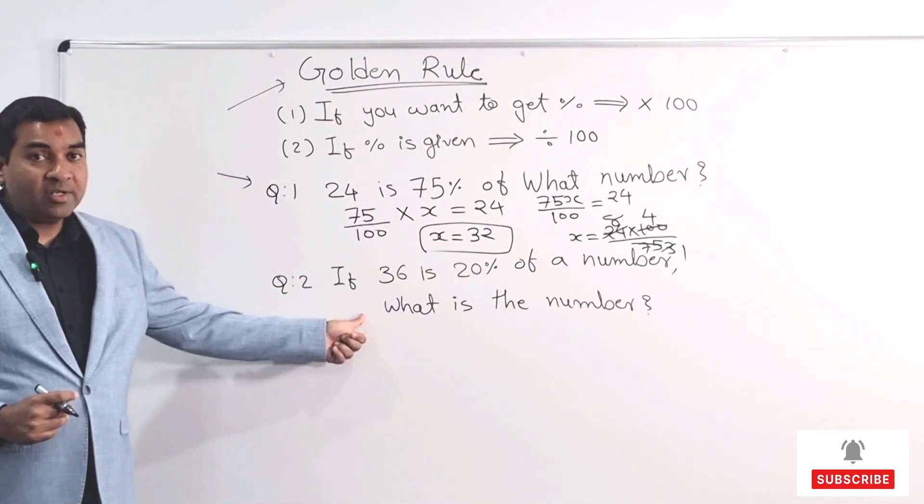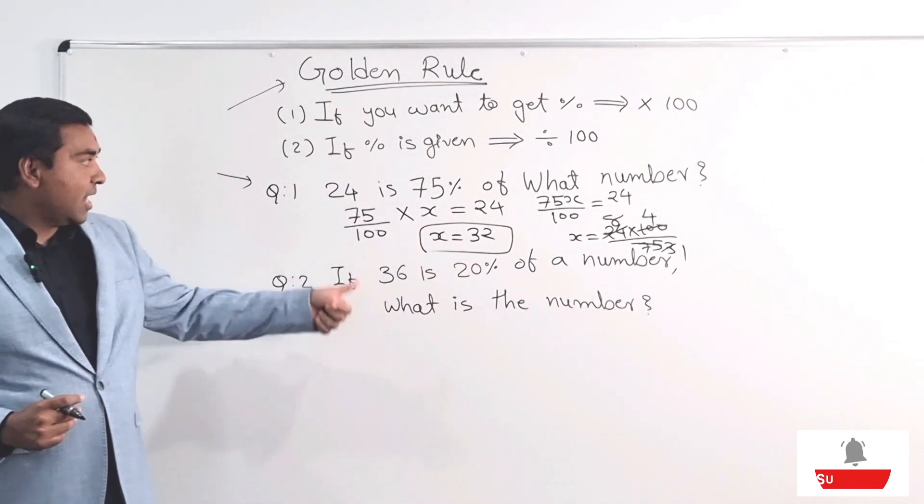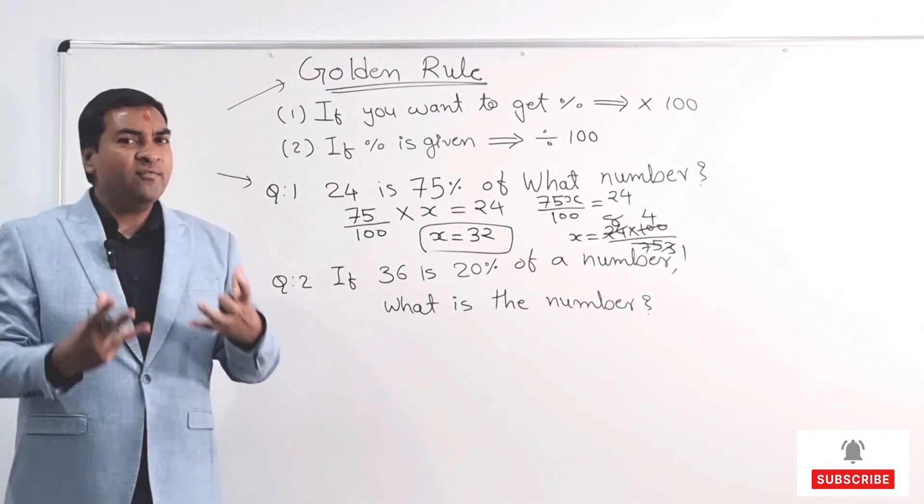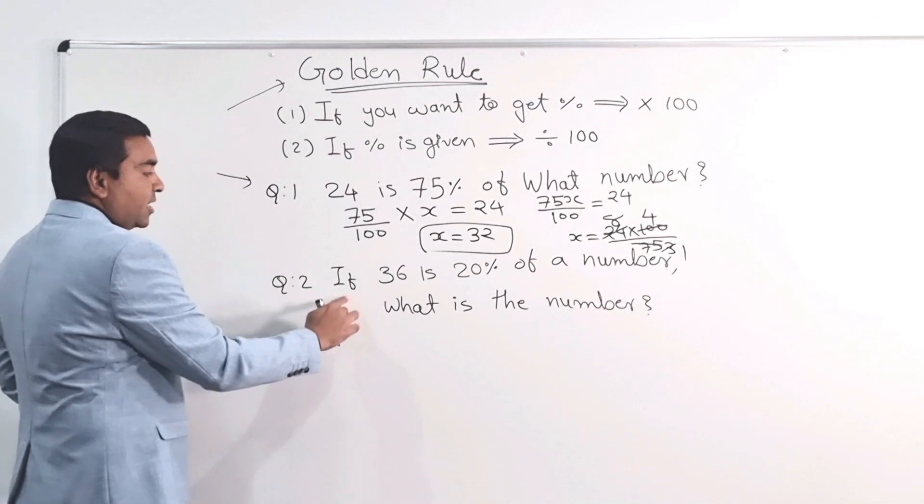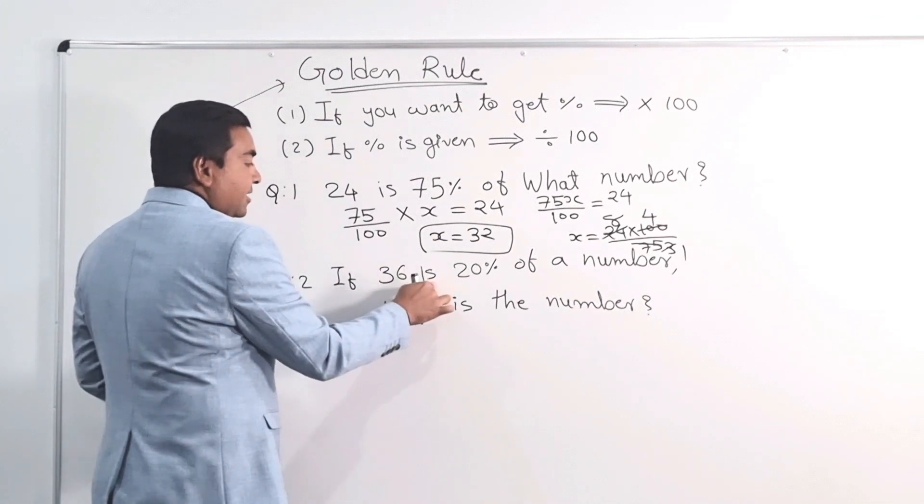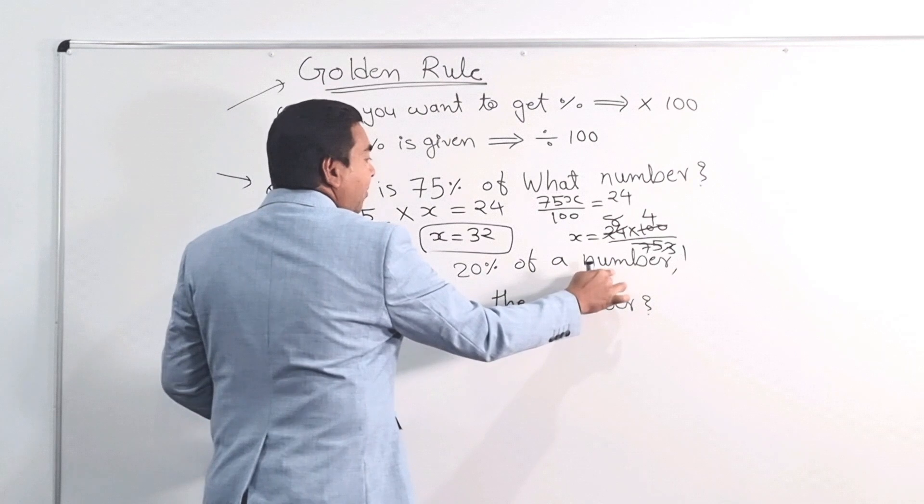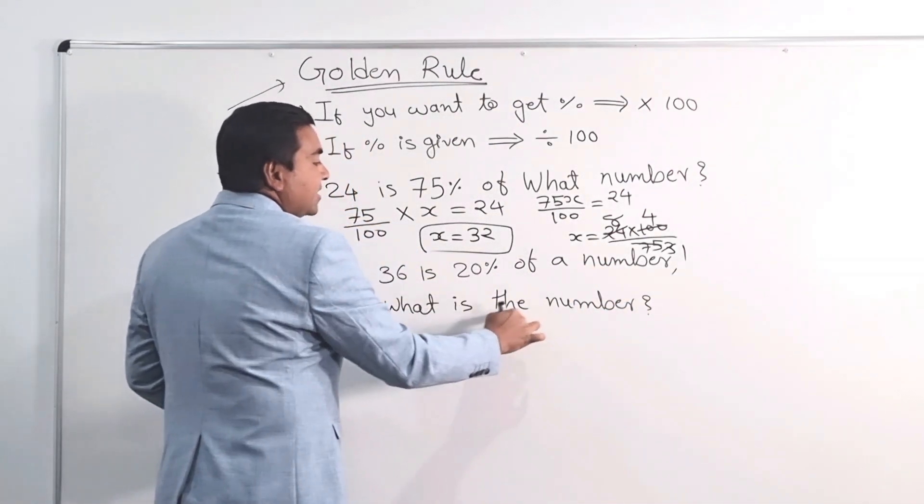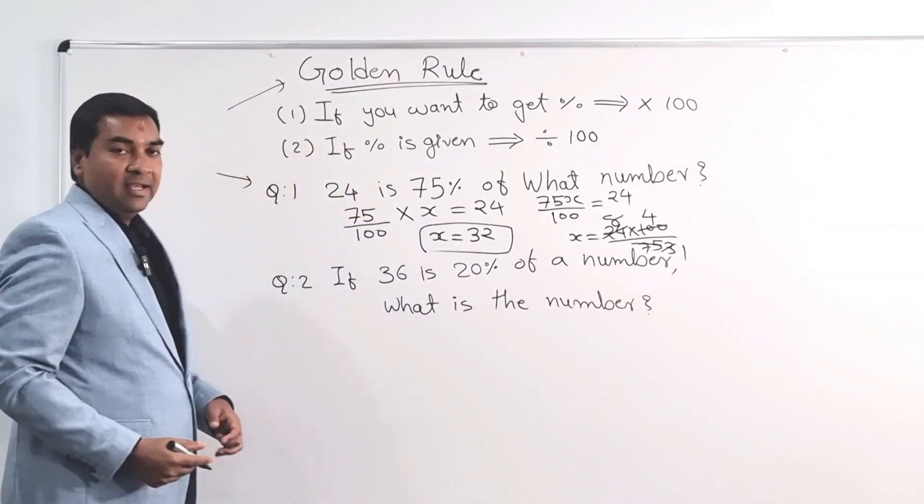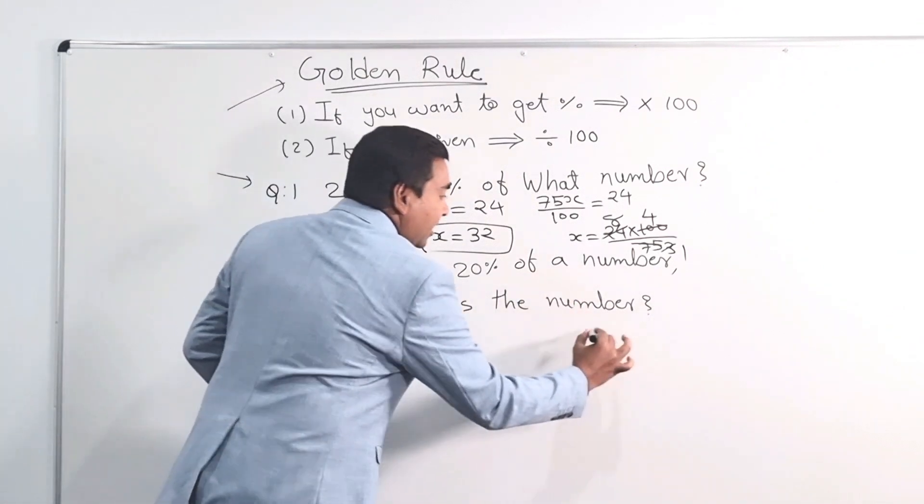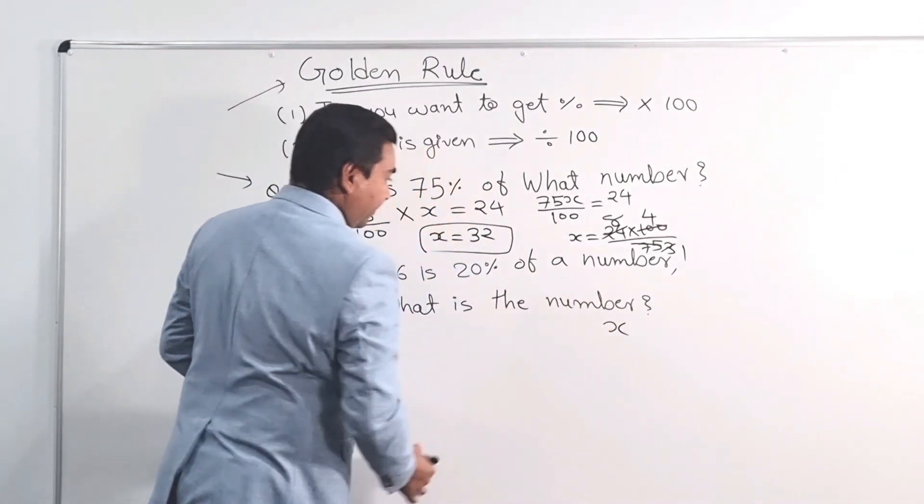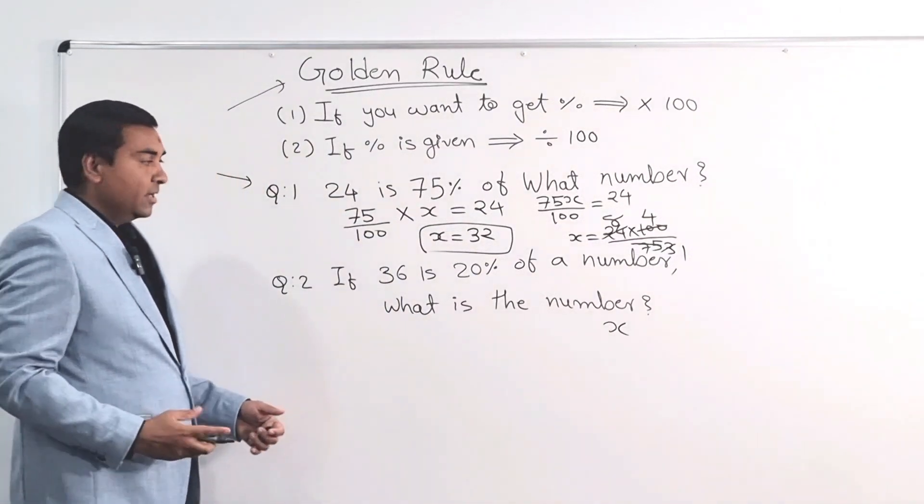Now, very similar question guys. Next question. So I think after doing this, it will be a bit more comfortable and confident. So here the question is, if 36 is 20% of a number, what is the number? Again guys, same process. I don't know the number. So I'm going to think like my number is X. My number is X.